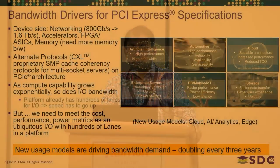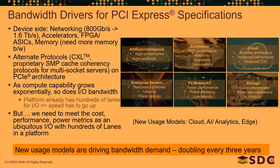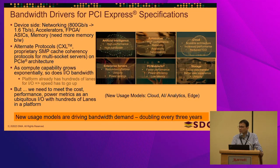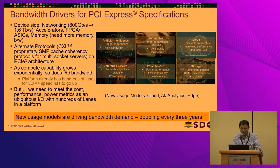As compute capability grows exponentially, so does I/O bandwidth, and especially if you're producing memory bandwidth, that demand is going to grow even more rapidly. Platforms are already at hundreds of lanes of PCIe today — CPU sockets give out 128 lanes per socket. If you count all the cache coherent links, it's many times more than that.